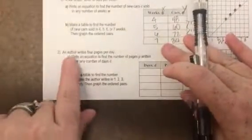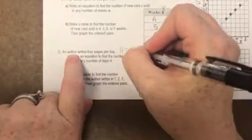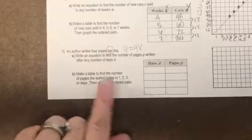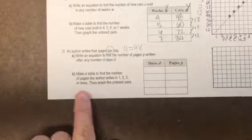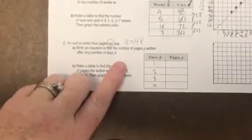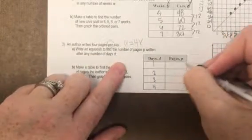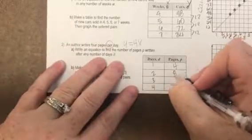Looking at number two, an author writes four pages a day. So our equation would be y equals 4x. Per means multiply, usually you're using x. Make a table of the number of pages the author writes in one, two, three, or four days. Well, on day one he wrote four pages total. Day two: eight. Day three: twelve. And day four: sixteen.